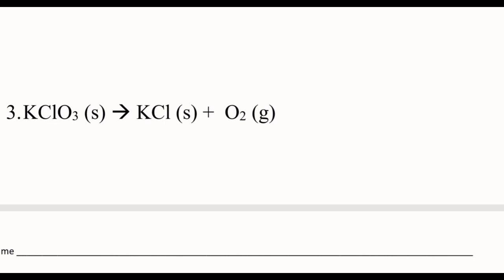I'm going to skip that second one and just go to the third one. Let's label these oxidation numbers: 1+, 5+, 2−, 1+, 1−, and 0. Vanadium goes from 3+ to 0, and nickel goes from 0 to 2+. Chlorine is going from 5+ to 1−.